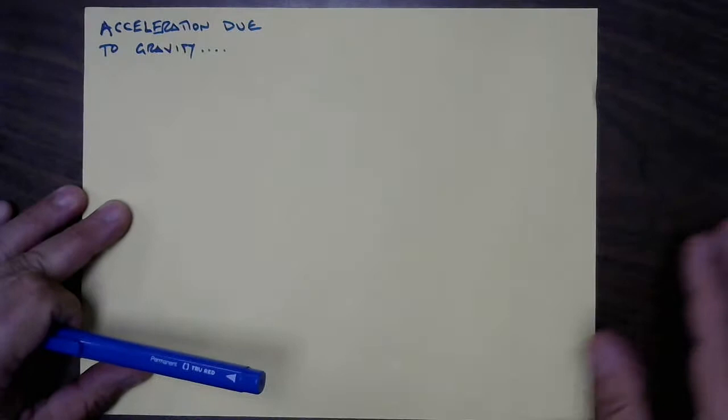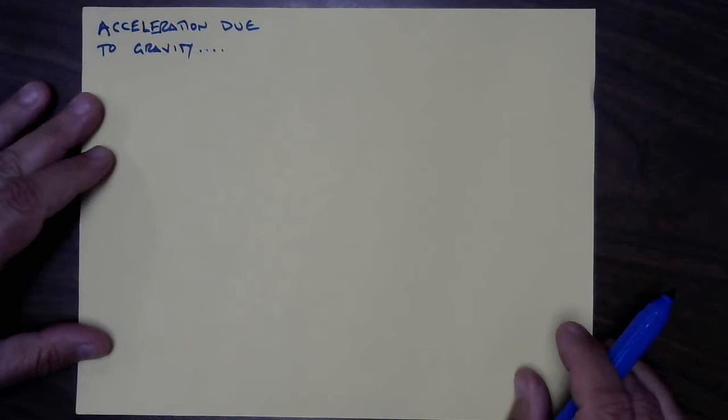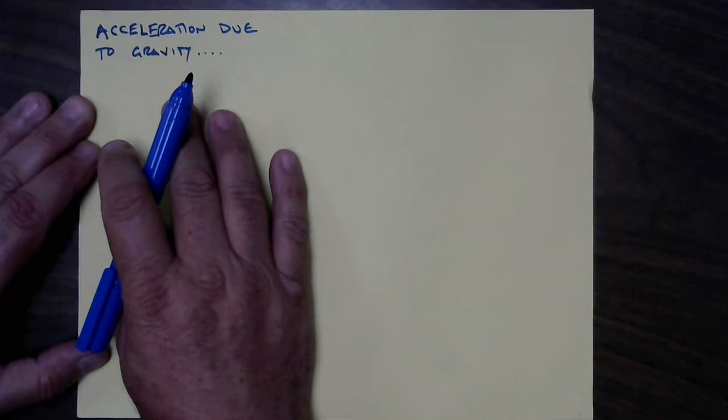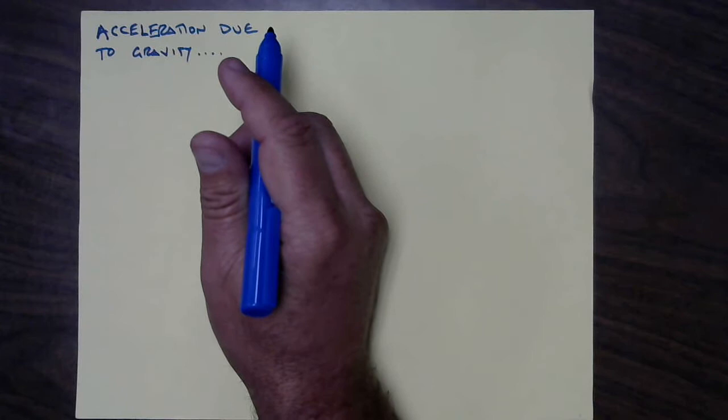Here we go again. I didn't put something in the last video so I've got to put it in this video. I forgot to mention, when we talked about acceleration in general, that there's a specific acceleration that everything has when it's being acted on by gravity. That's what Galileo was saying in chapters one and two: that all objects near the earth's surface accelerate towards the earth